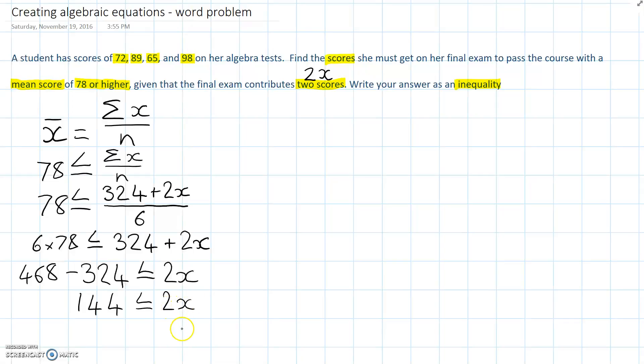Between the 2 and the x is a times, the opposite of times is divide. So, we take this 2 over the other side, 144 divided by 2 gives us 72 is less than or equal to x.